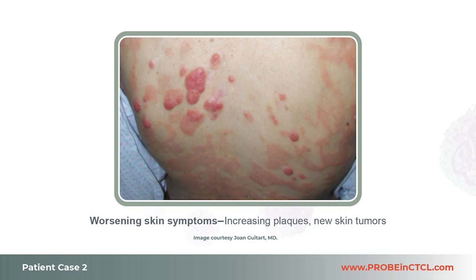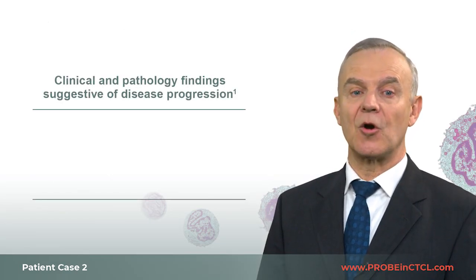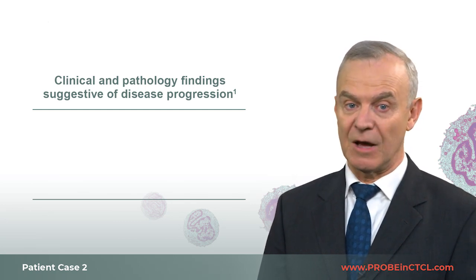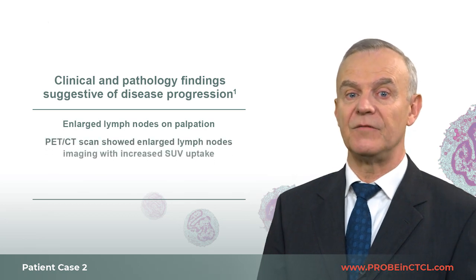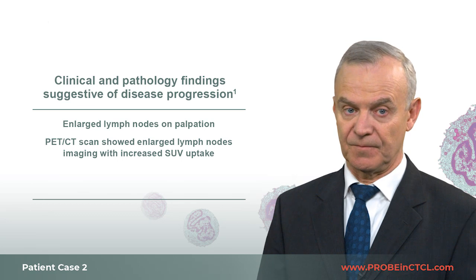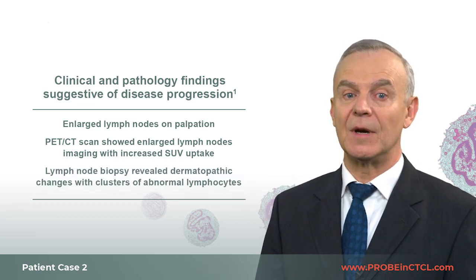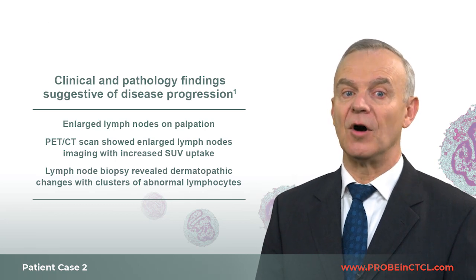Her skin symptoms were well controlled for around one year. Currently, she is presenting with worsening skin symptoms, including an increasing extent of patches and plaques, now covering over 25% of body surface area. She has also recently developed multiple skin tumors, suggestive of disease progression. A complete blood cell count showed normal white blood cell distribution without lymphocytosis. Palpation showed enlarged axillary lymph nodes. PET-CT imaging revealed enlarged lymph nodes ranging from two to three centimeters with increased SUV uptake. Lymph node biopsies revealed dermatopathic changes with small clusters of abnormal medium-sized lymphocytes. All of these are indicative of disease progression.